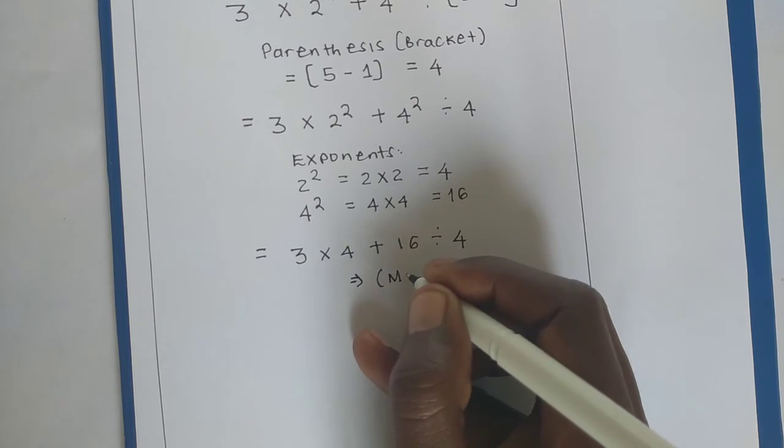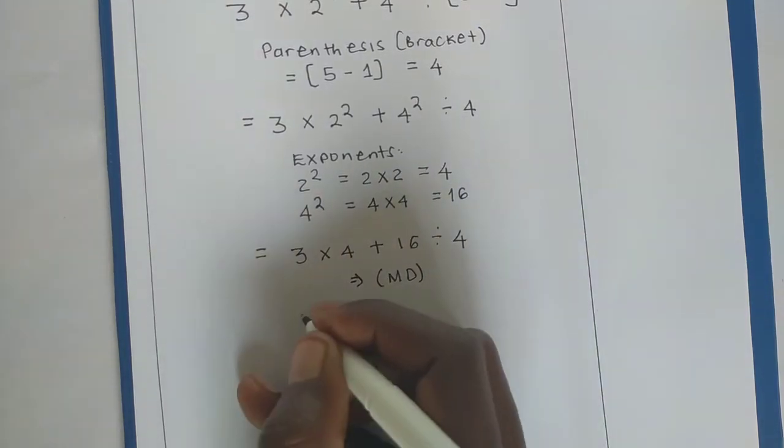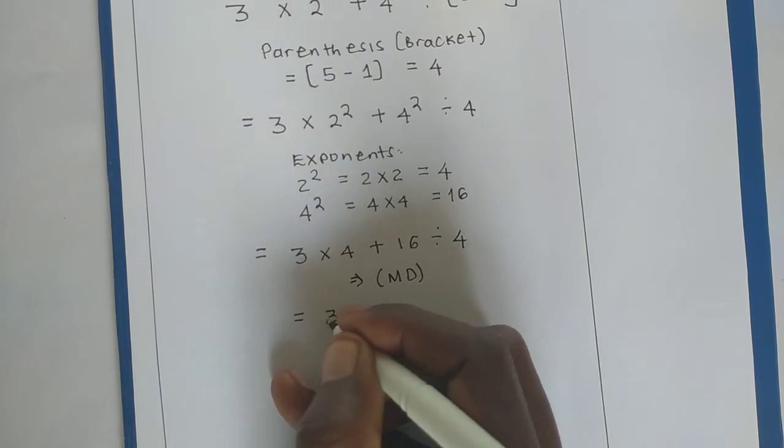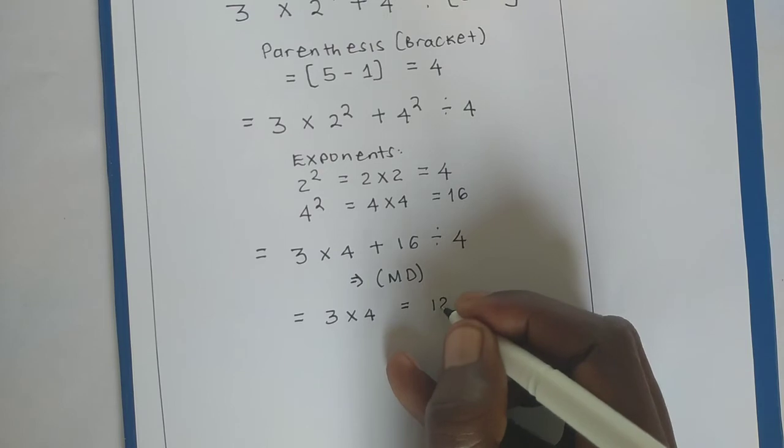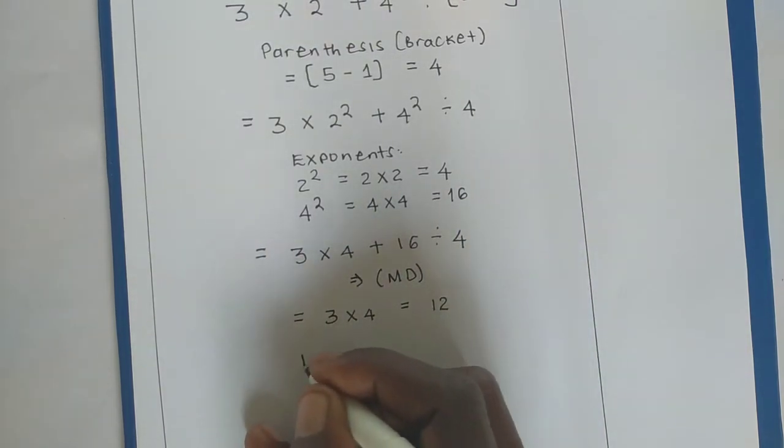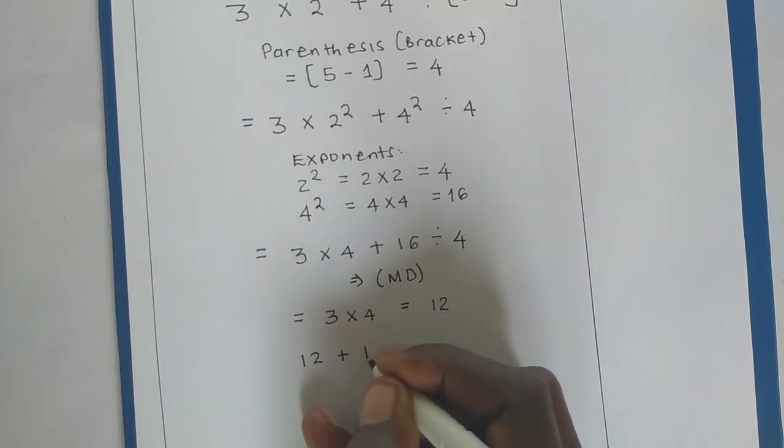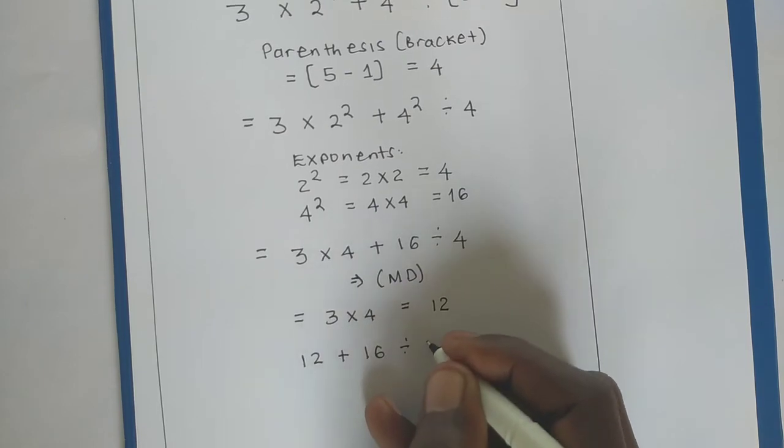We shall multiply, and then we shall divide. So, I will have 3 times 4 will give me 12, resulting into 12 plus 16 divided by 4.